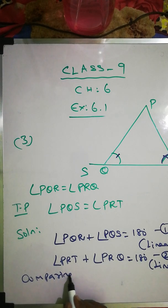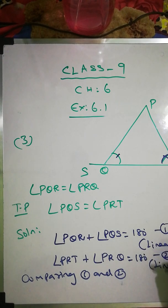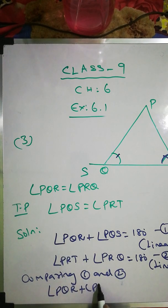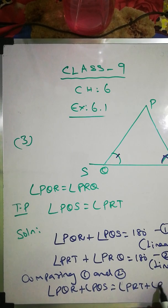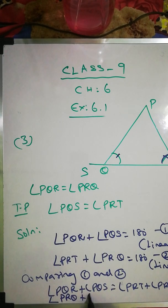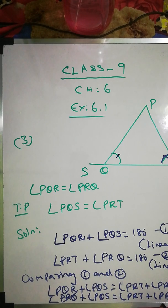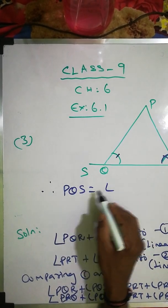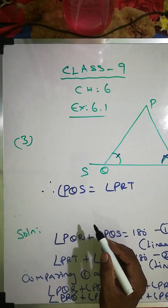Comparing equations 1 and 2, both right-hand sides are equal to 180. So the left-hand sides are equal. Since angle PQR equals angle PRQ is given, we can cancel those terms from both sides. What remains is angle PQS equals angle PRT. Hence proved.